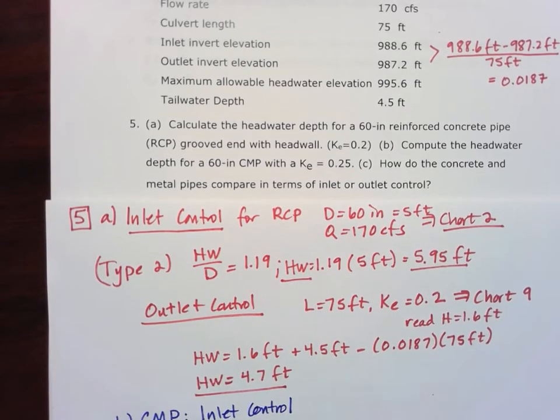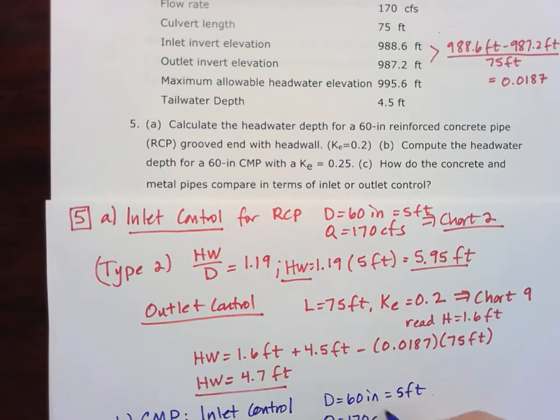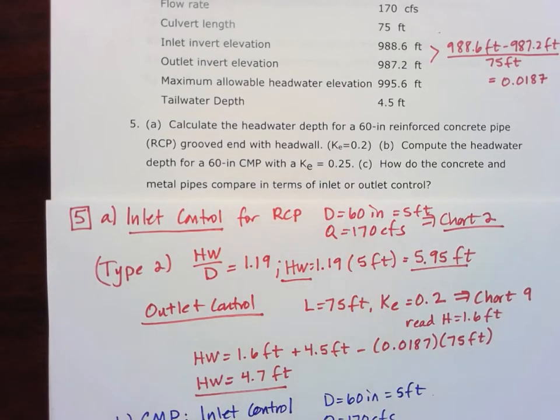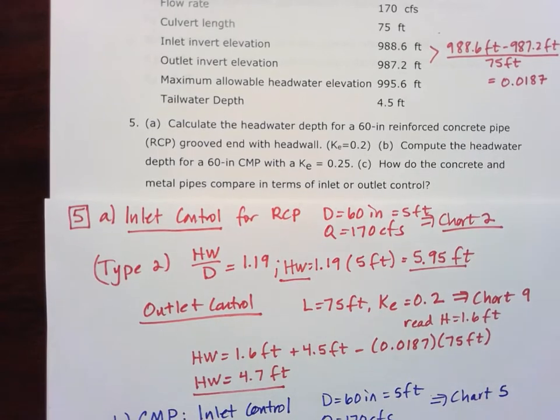So this is for our CMP, and we'll do the inlet control first. Again, we have the same information. The diameter is 60 inches, same thing as 5 feet. Our Q is still 170 cubic feet per second. The only thing that really changed here is that we have a new KE value of 0.25. So for our corrugated metal pipe, for our inlet control, we're going to start off on chart 5.